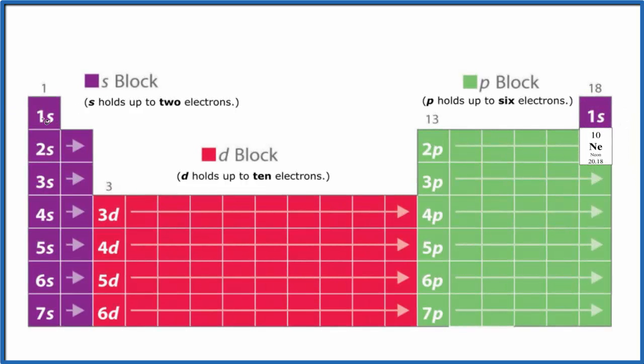1s¹, 1s². Then we go to the second energy level: 2s¹, 2s². Still in the second energy level, we have 2p: 1, 2, 3, 4, 5, 6, and we're at neon.